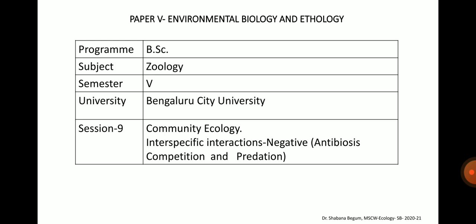Under the paper entitled Environmental Biology and Ethology. In my previous lectures on Population Ecology, I had discussed about the various attributes or characteristics of population and its regulation. Today, I am going to discuss negative interspecific interactions in a community such as antibiosis, competition, predation and parasitism.